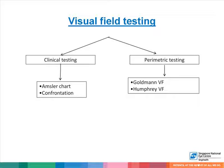Visual field can be tested either in the clinic or by performing formal perimetric testing. In the clinic, one can use either an Amsler chart or confrontation visual field testing. Perimetric systems that can be used are Goldman visual field as well as Humphrey visual field, which are examples of kinetic and static perimetry.